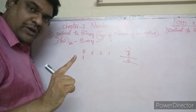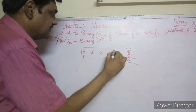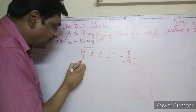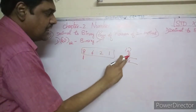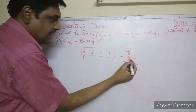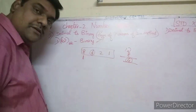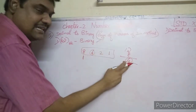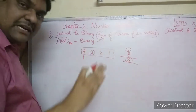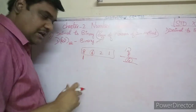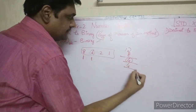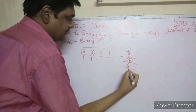Now compare the remainder 4 with the next power of 2, which is also 4. Since 4 is equal to 4, we put a 1. Then 4 minus 4 equals 0.